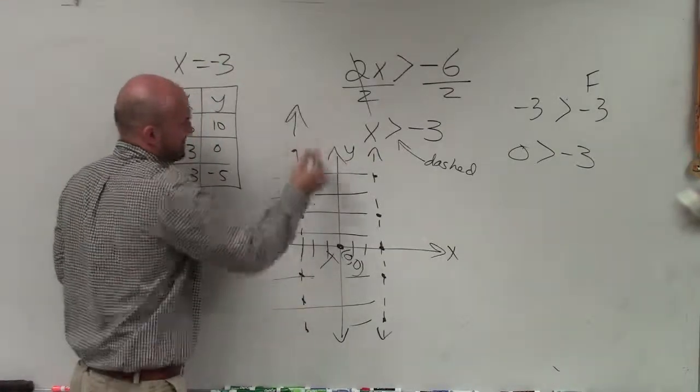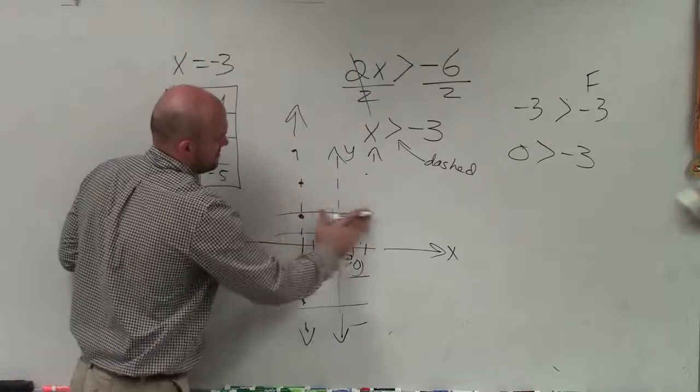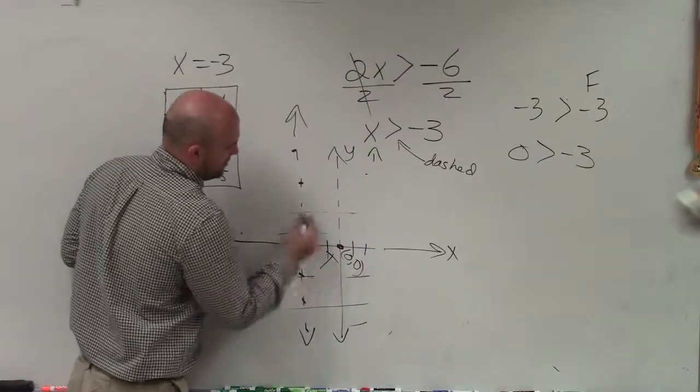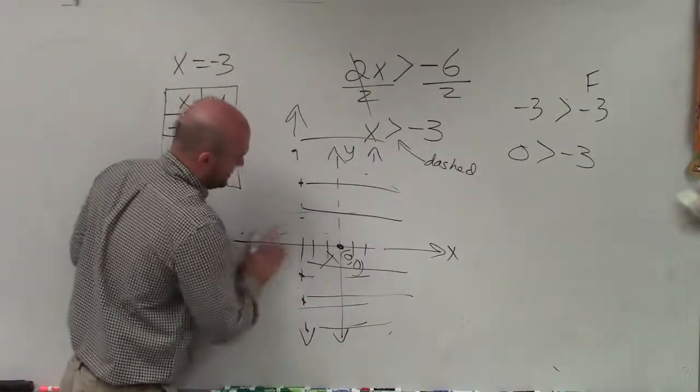So my dashed line looks like this, not this. So that means all the points to the right of my line are true. I forgot the negative. My apologies.